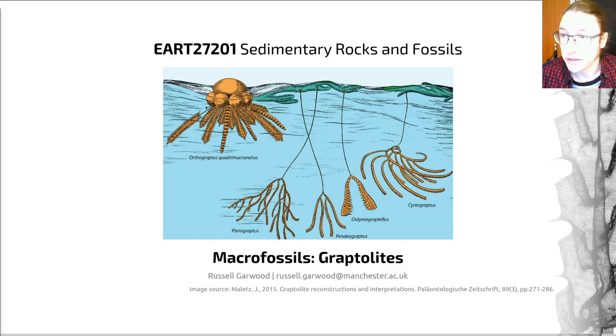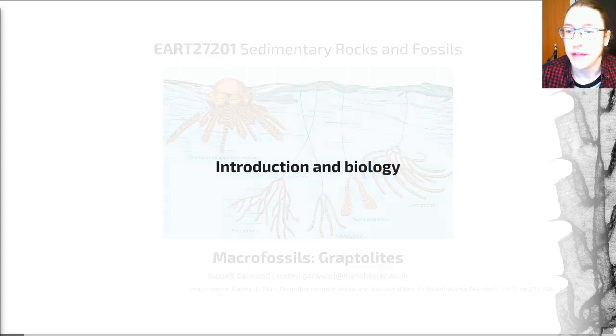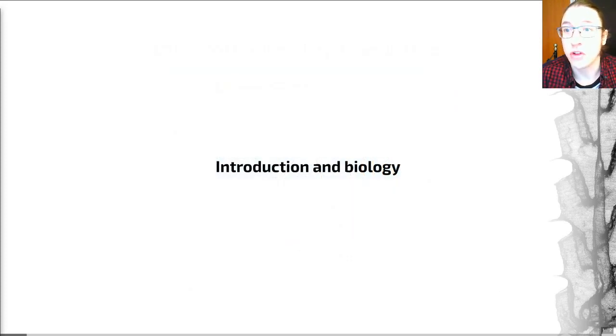So before I started, I just wanted to highlight that actually this image I really like as my title slide, as we'll discover later, is an image showing examples of incorrect modes of life for Graptolites. So do bear that in mind, don't read too much into it. It's just the only pretty image that I could find to show Graptolites and I really liked it, so I included it.